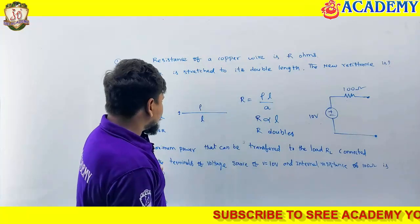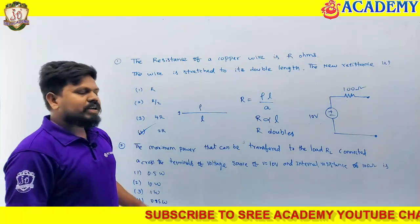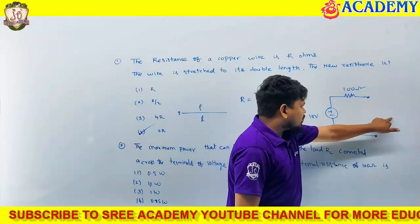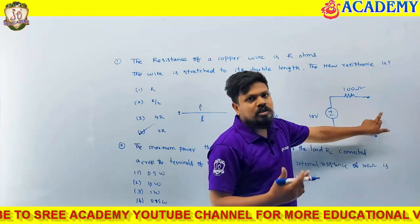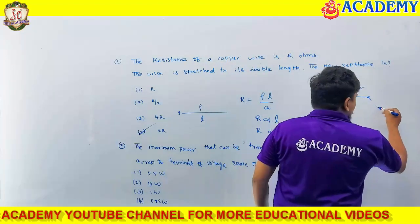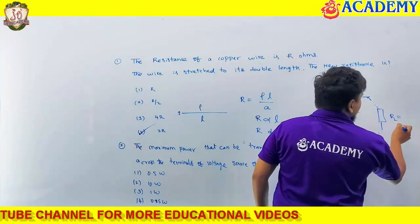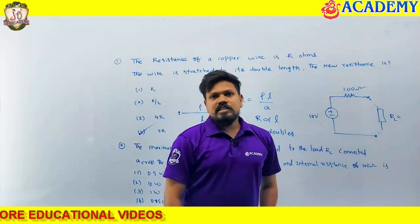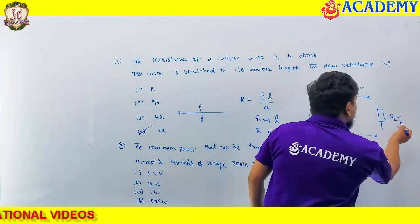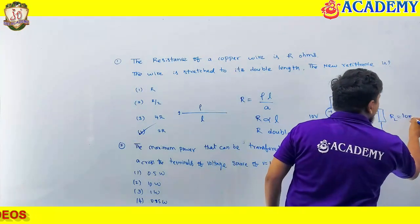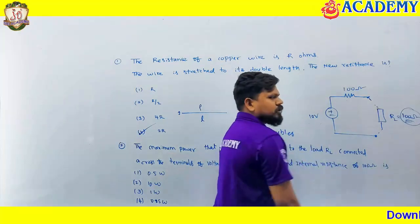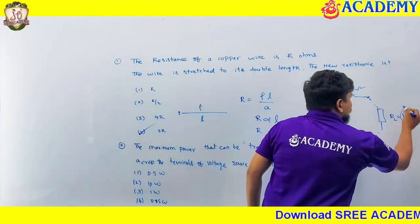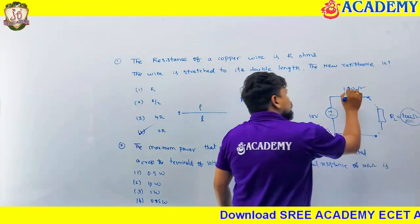Now, maximum power transfer we have to calculate. What is the maximum power transfer theorem? We need to find how much resistance to connect here to get maximum power across this resistance. Whatever resistance we connect — the load resistance — must be equal to the source resistance, or internal resistance. Load resistance must be equal to internal resistance, so this resistance value will be 100 ohms.